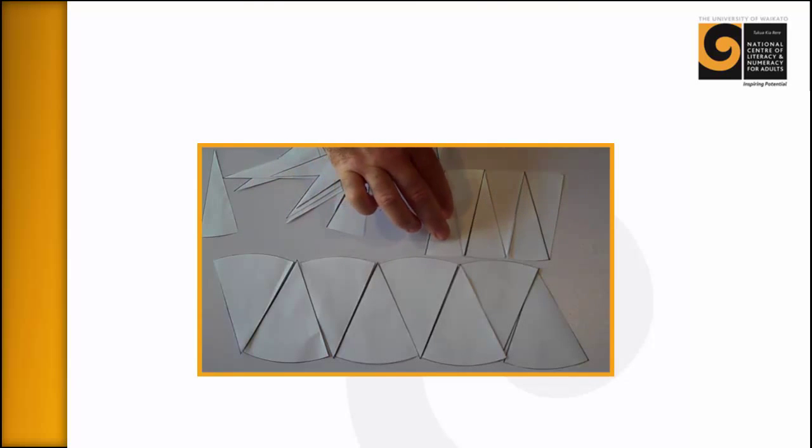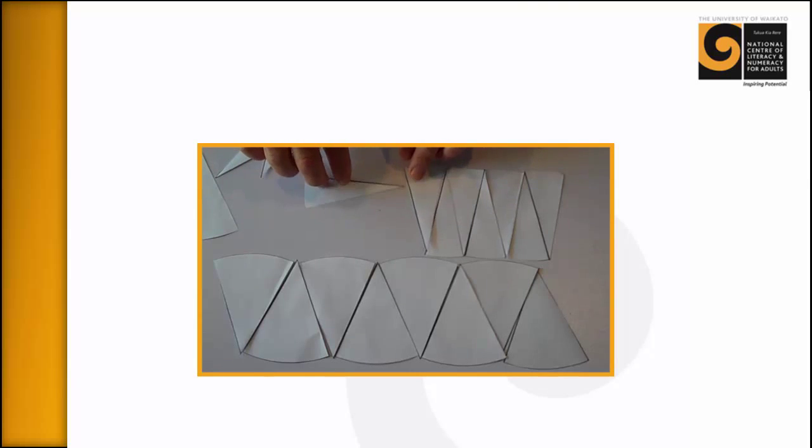And as you can see, when they begin to rearrange the rectangle, the curved sides that were making it look not rectangular are slowly going away. And so as you cut them thinner, it becomes more and more rectangular.